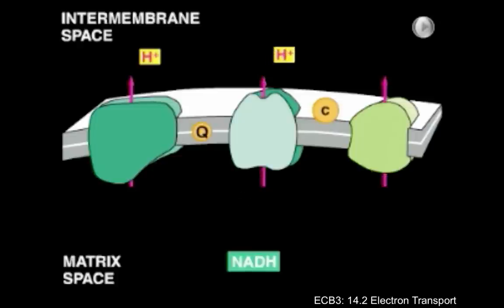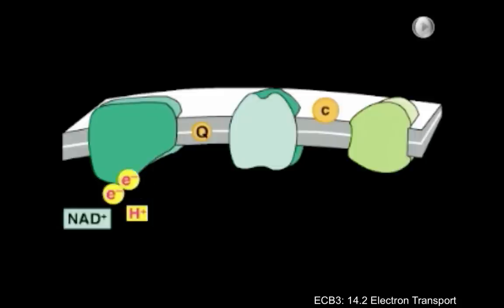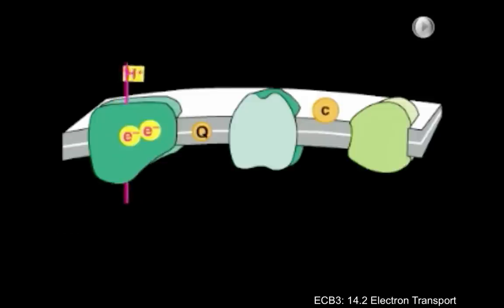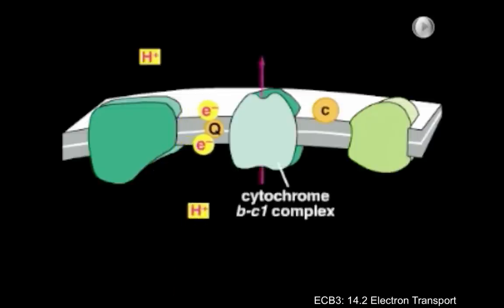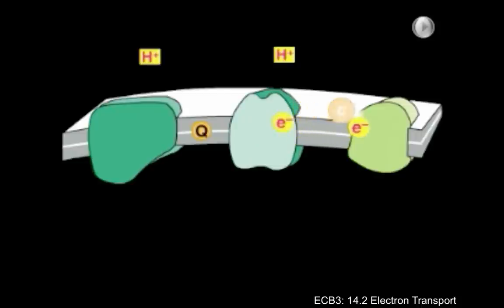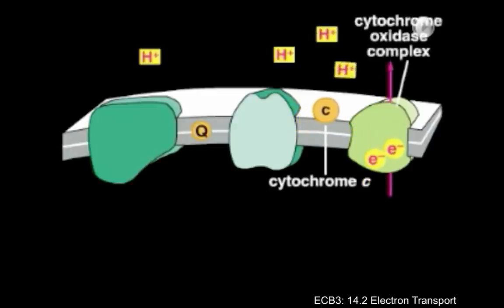The pumping creates a proton gradient across the membrane, which the mitochondrion taps to make ATP. The electron transfer begins at the NADH dehydrogenase complex, which has a higher affinity for electrons than NADH and easily strips away the high-energy electrons. As the electrons are transferred from one protein to another in the complex, energy is released and used to pump protons across the membrane. Electrons are then transferred to ubiquinone, which shuttles them to the cytochrome-BC1 complex, which again pumps protons as they flow through it.